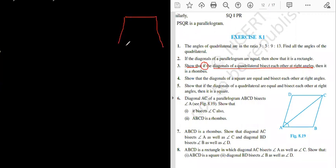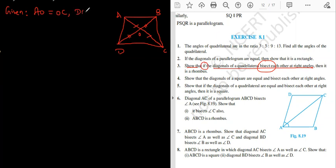Is this thing clear? Yes, sir. Diagonal of a quadrilateral bisects each other at right angle. Can you tell me the given thing? What should I write in given? So, AO is equal to OC and DO is equal to OB. Very good. That means bisect is done. AO equals to OC and DO equals to OB.